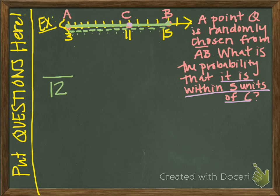Here is C on the number line. Within 5 units means 5 units on either side of C. Going left from C, we have 5 units we could choose. Going right from C, we also have 5 units — however, the last space to the right is outside the confines of segment AB, so that one doesn't count. Within segment AB, there are 9 units that fall within 5 units of C.